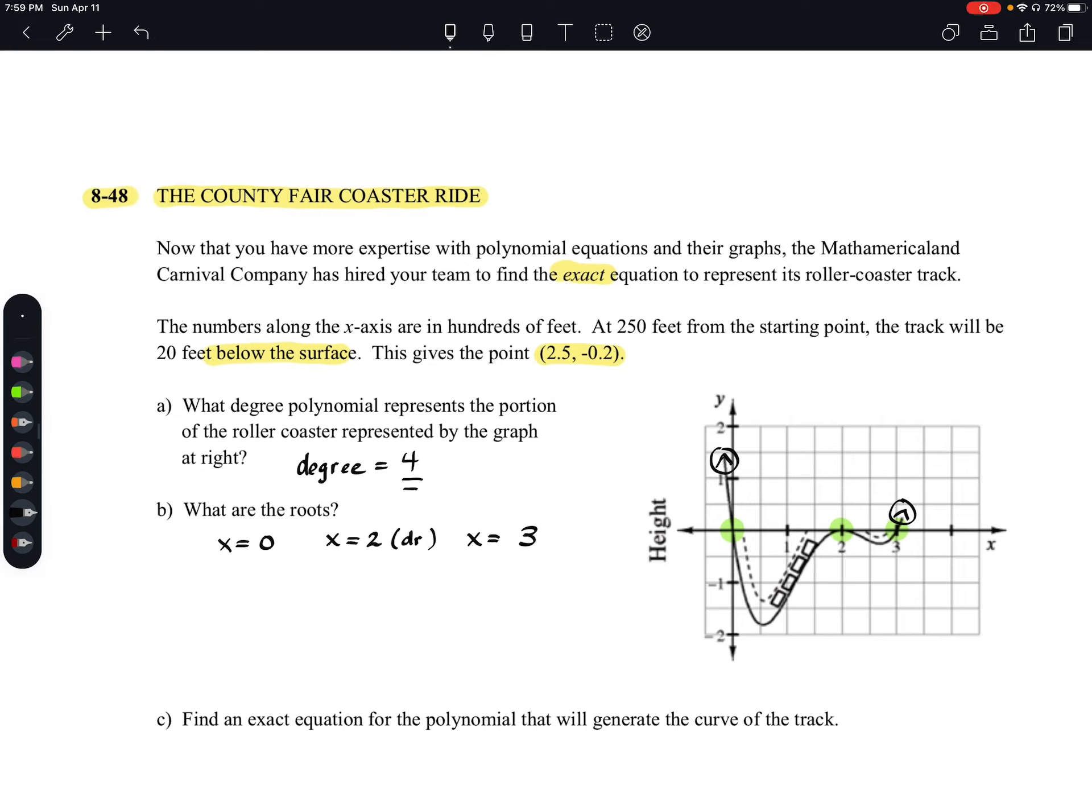Letter C says, find an exact equation for the polynomial that will generate the curve of the track. So I'm just going with an exact equation. We can start out here, and I'm going to use this space above C, just because I know we're at the bottom of the paper and I don't have much space beyond that. So I'm going to just start right up here for C.